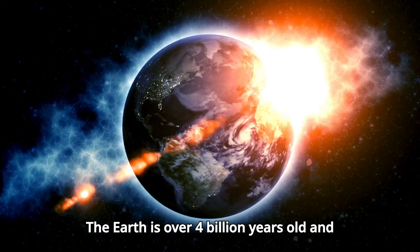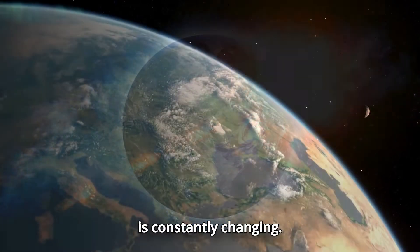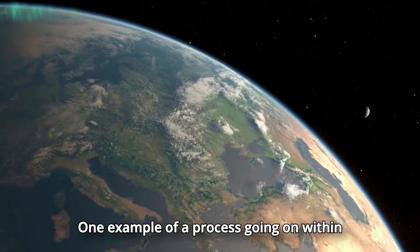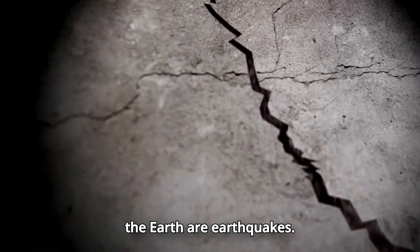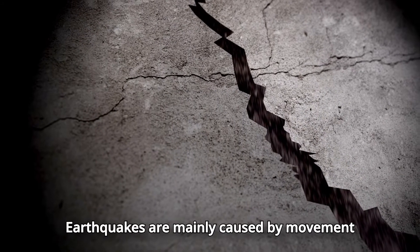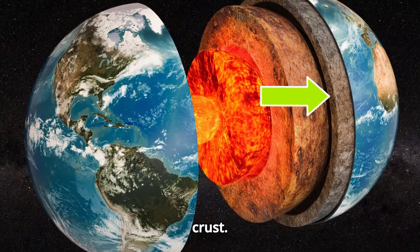The Earth is over 4 billion years old and is constantly changing. One example of a process going on within the Earth are earthquakes. Earthquakes are mainly caused by movement in the Earth's outer layer, called the crust.